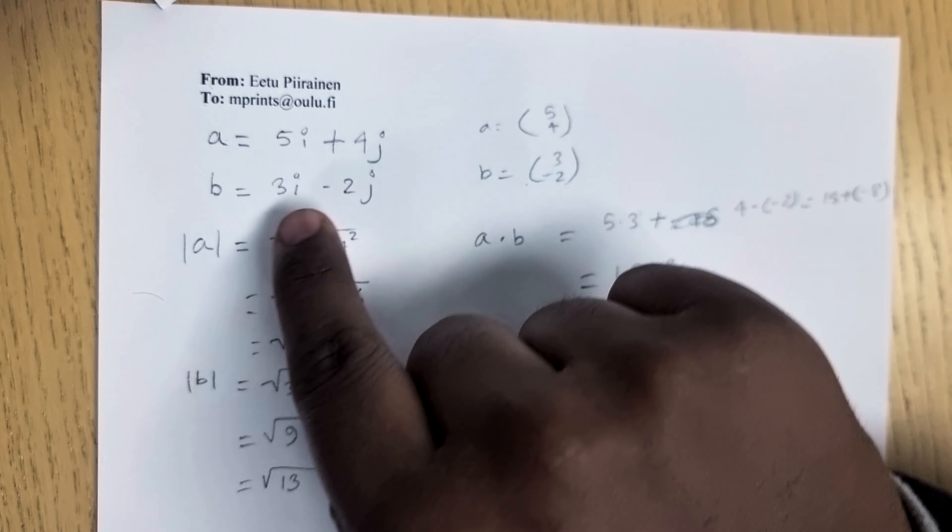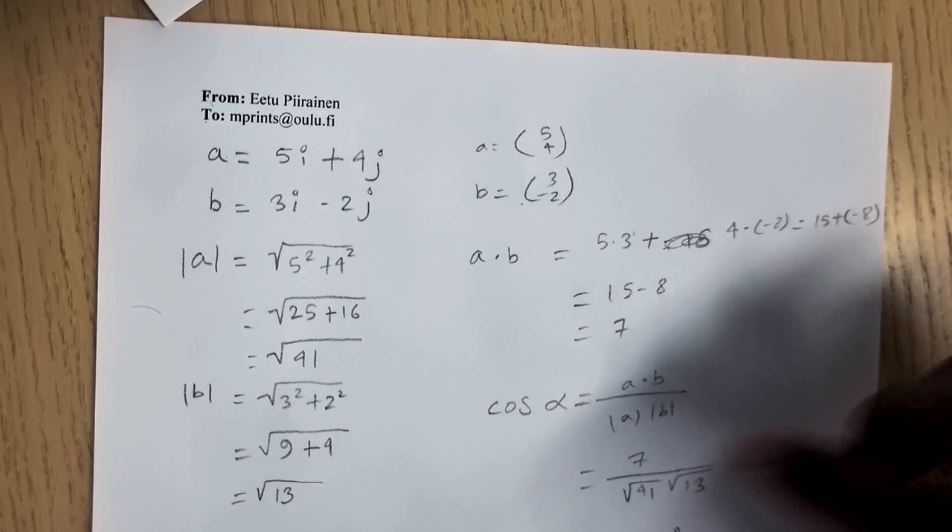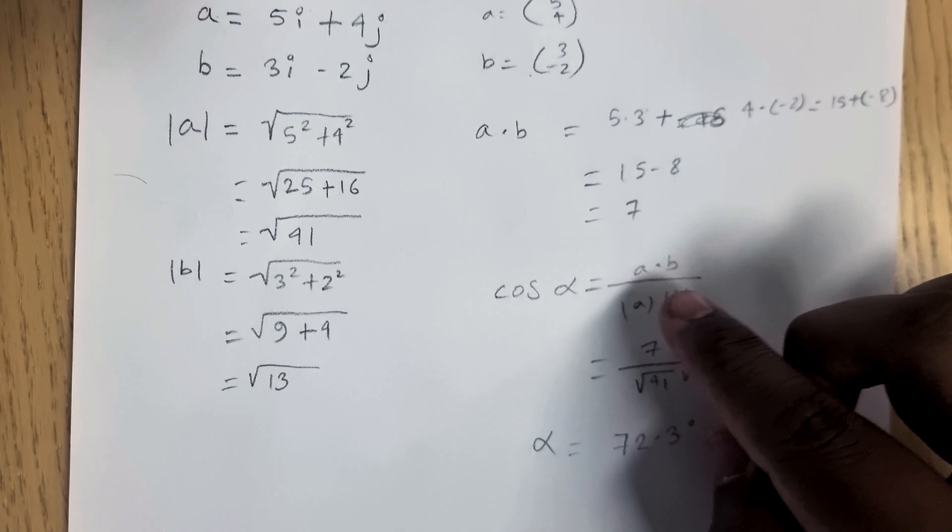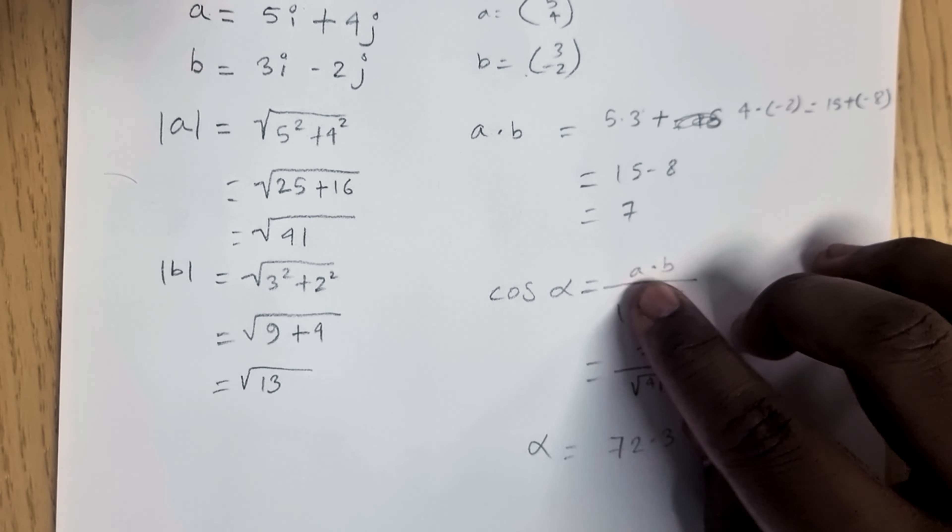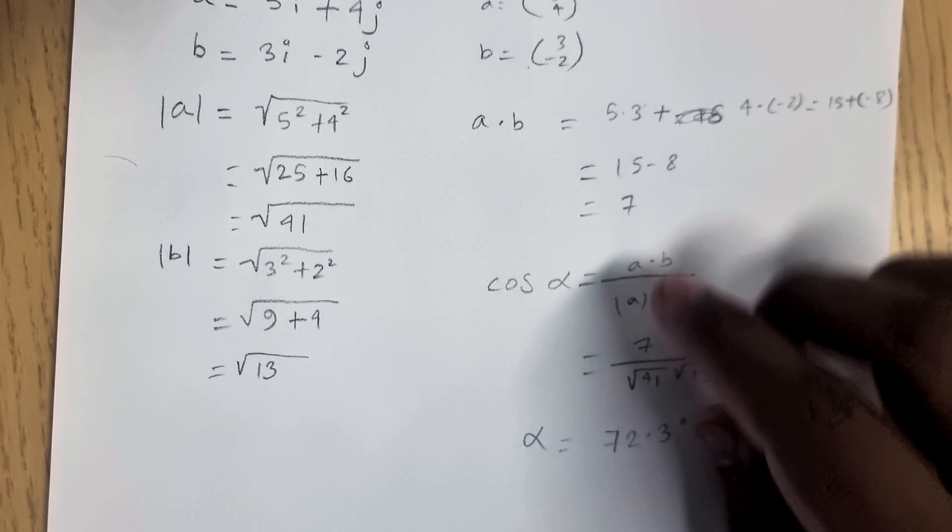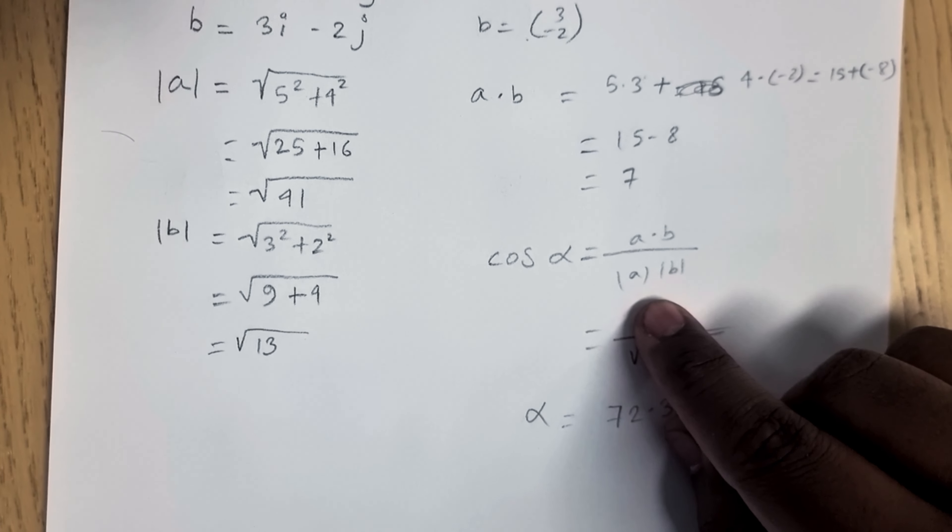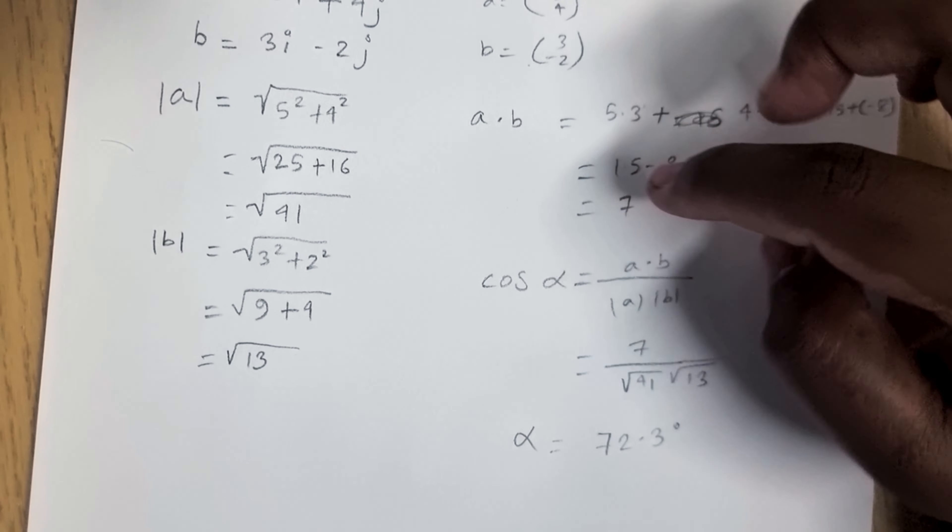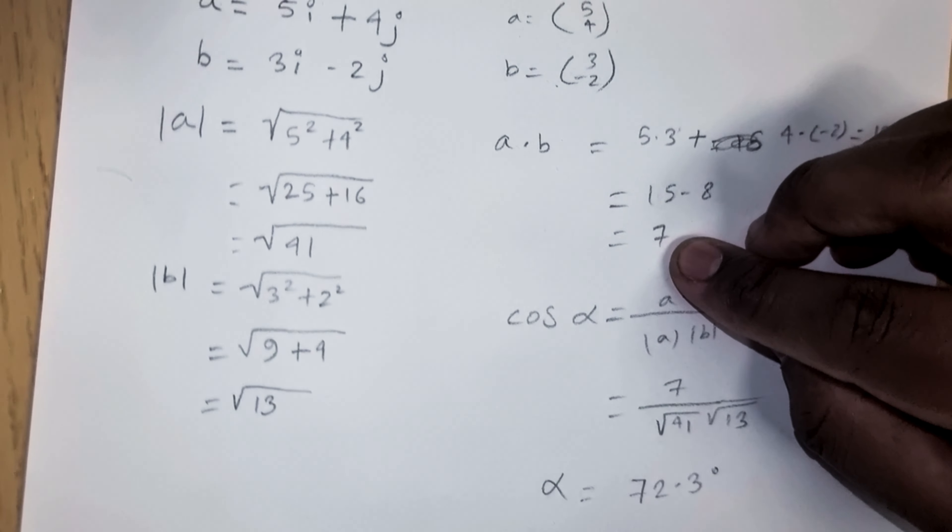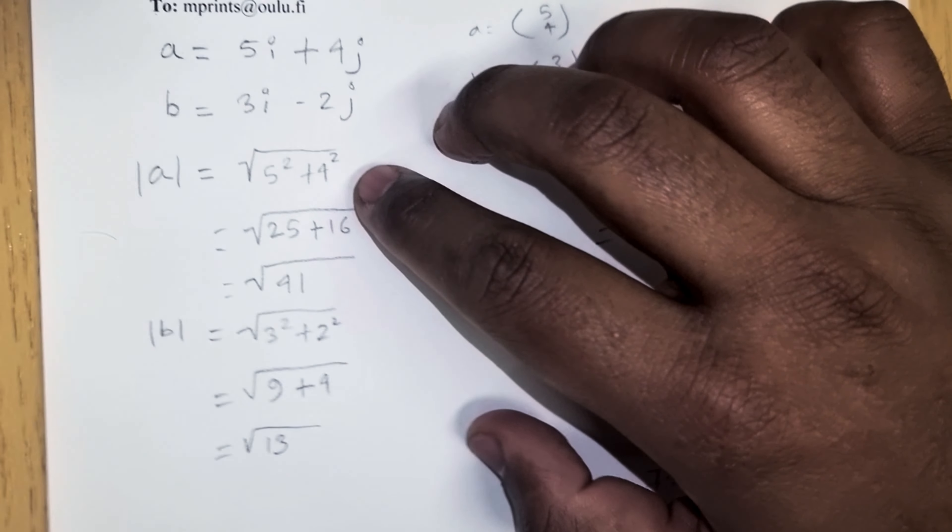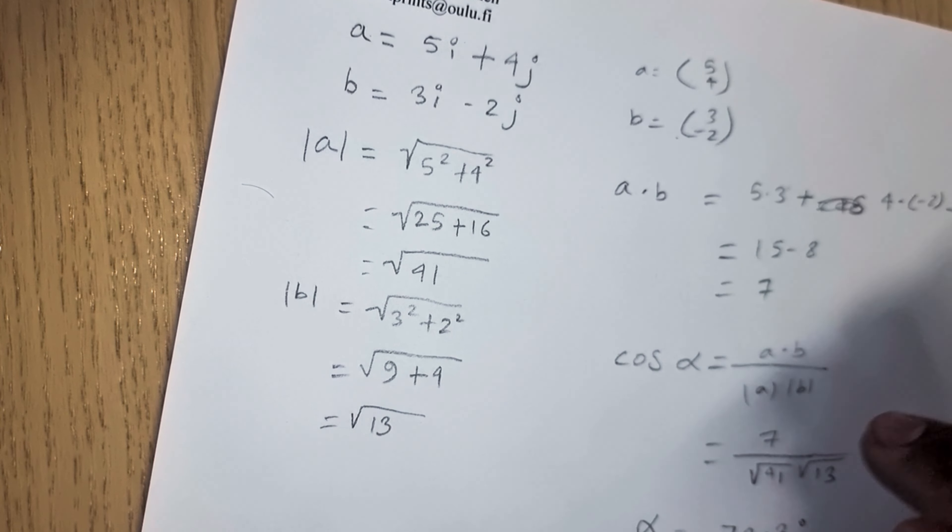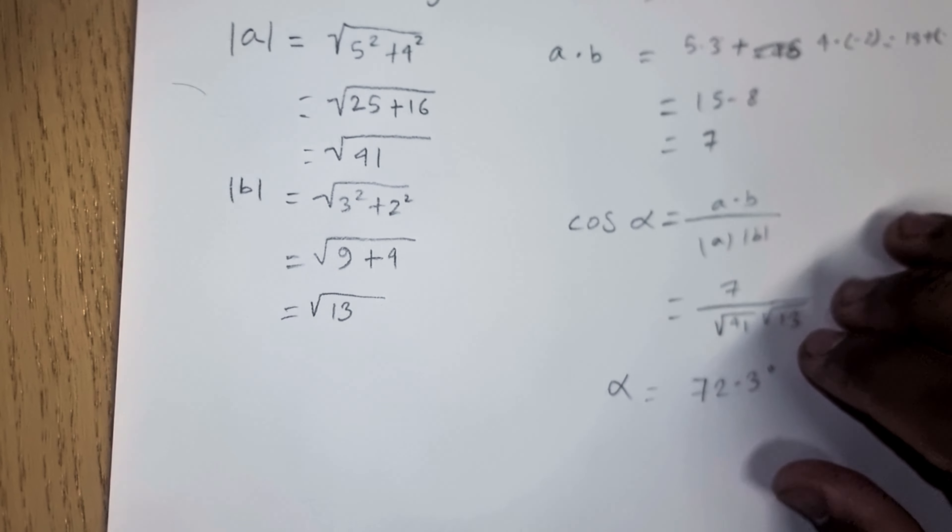We have the a and b vector here and we are supposed to find the angle theta as instructed in the question. The equation to find that out is a dot b vector multiplication divided by the multiplication of their distances. For the multiplication of the vectors it comes to seven and the distance of a is root 41, b is root 13, so we just put that into the equation and we get theta as 72.3 degrees.